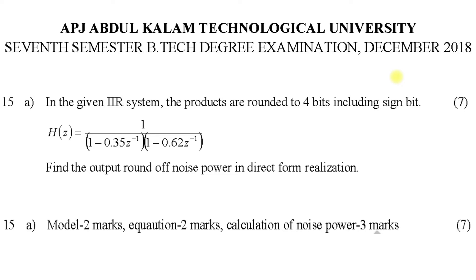In the given IIR system, the products are rounded to 4 bits including sign bit. H is given here. Find the output round-off noise power in direct form realization.